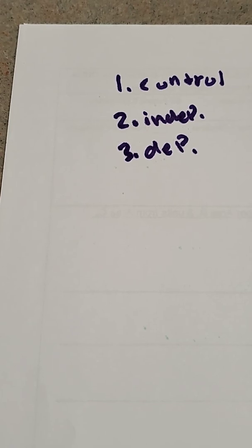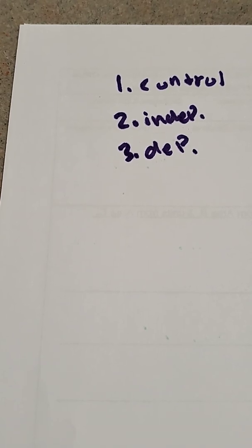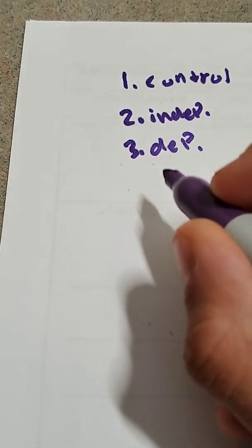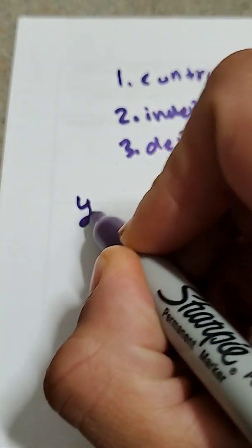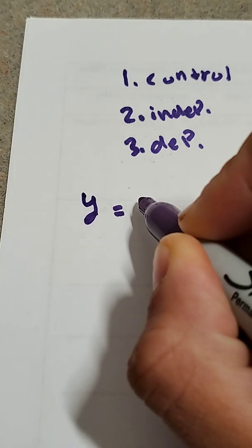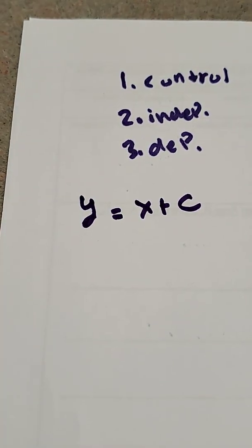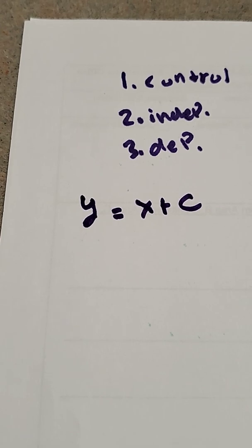From the healthcare we have, to our cell phones, to the cars we drive — we were able to describe the world around us through experiments and variables. So let's look at a random equation: y is equal to mx plus c.